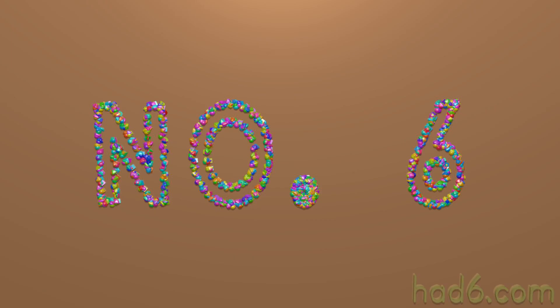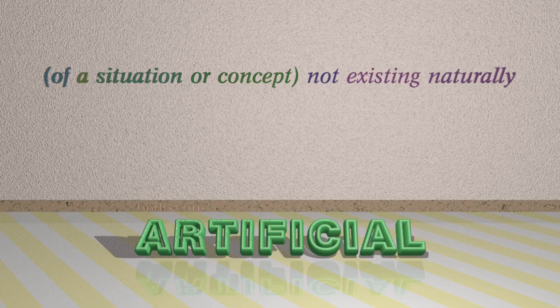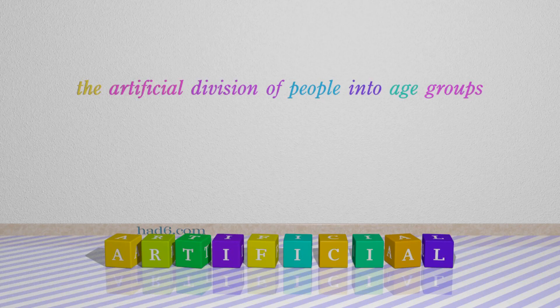Number 6: Artificial. Which means of a situation or concept, not existing naturally. For example, the artificial division of people into age groups.